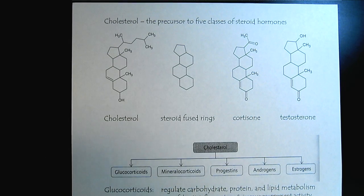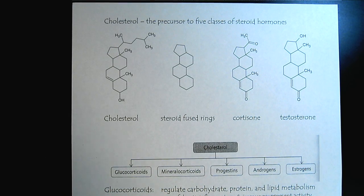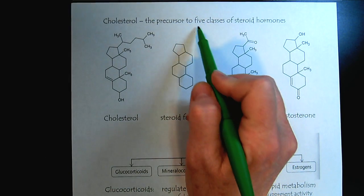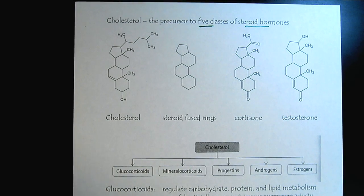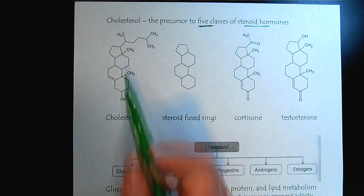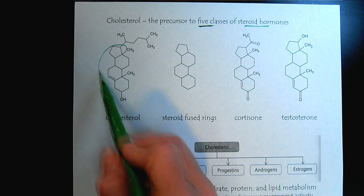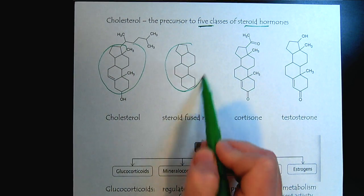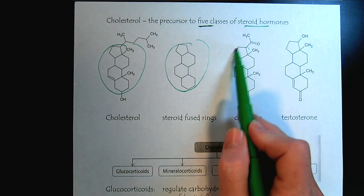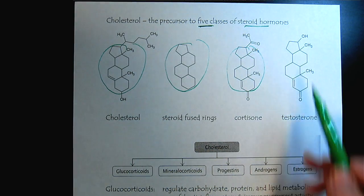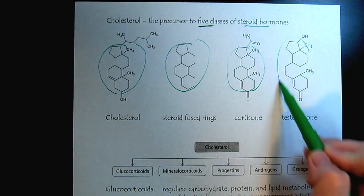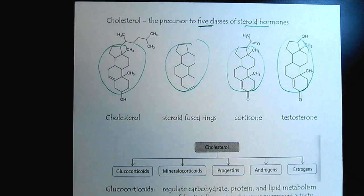Cholesterol is the precursor for five different classes of steroid hormones. We want to train our eye to look for the fused steroid rings — the four fused rings.